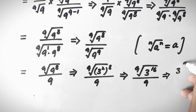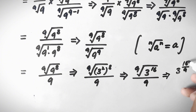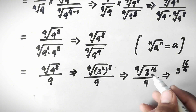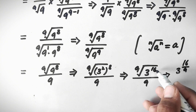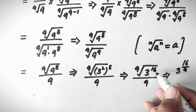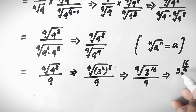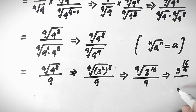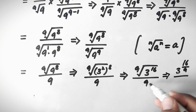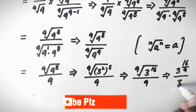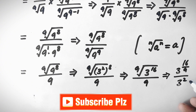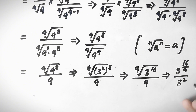The 9th root can be written as raising to the power 1 over 9, so the 9th root of 3 to the power 16 equals 3 to the power 16 over 9. The denominator 9 equals 3 squared, so we have 3 to the power 16 over 9, divided by 3 squared.